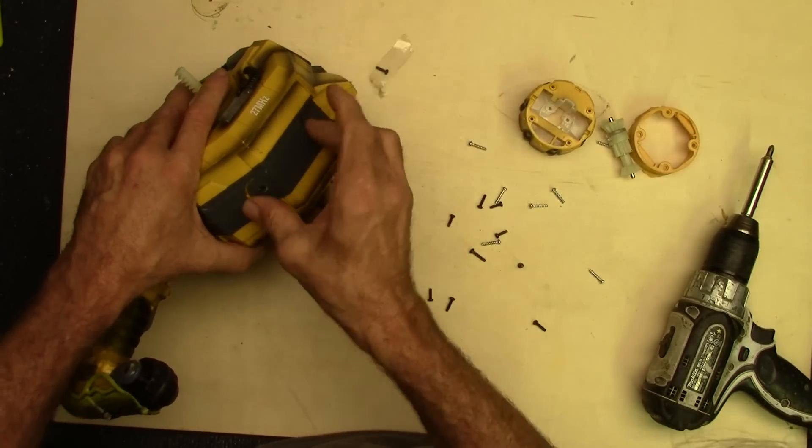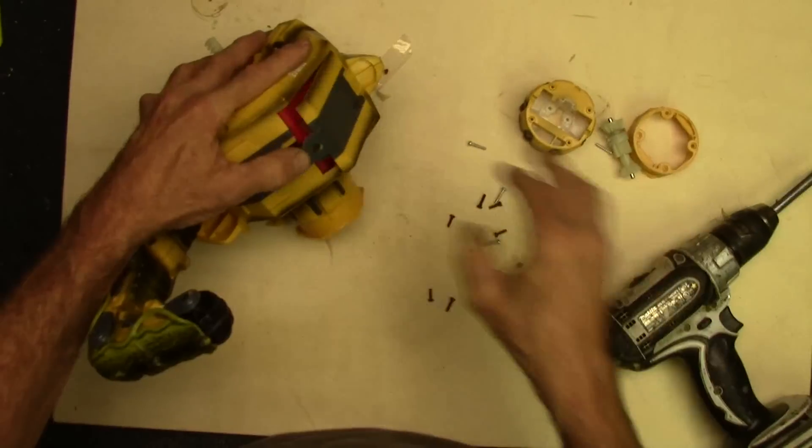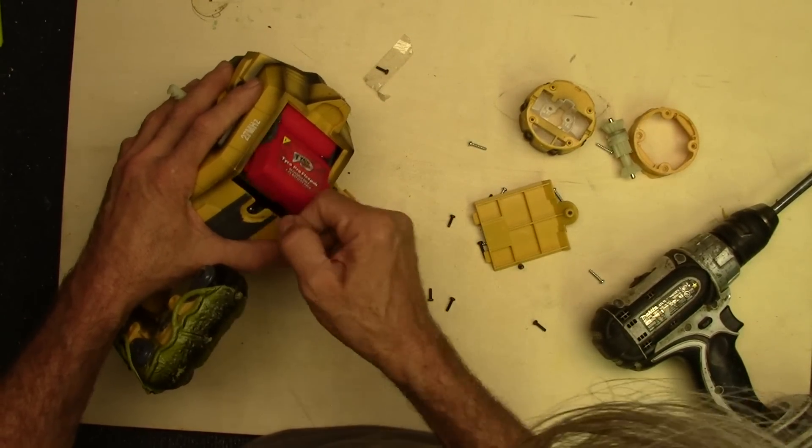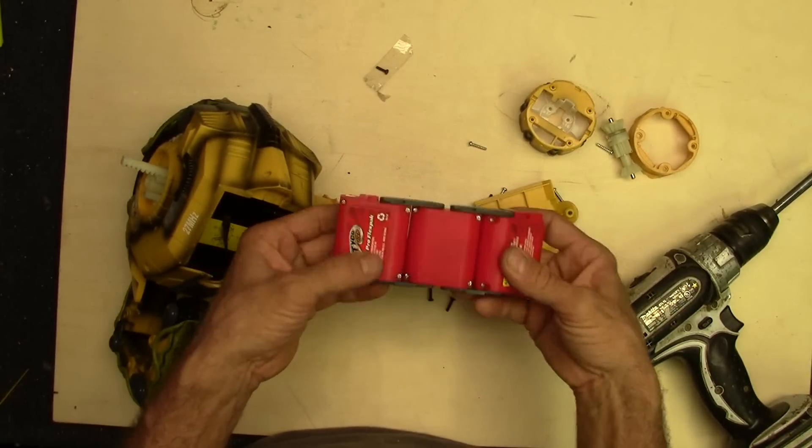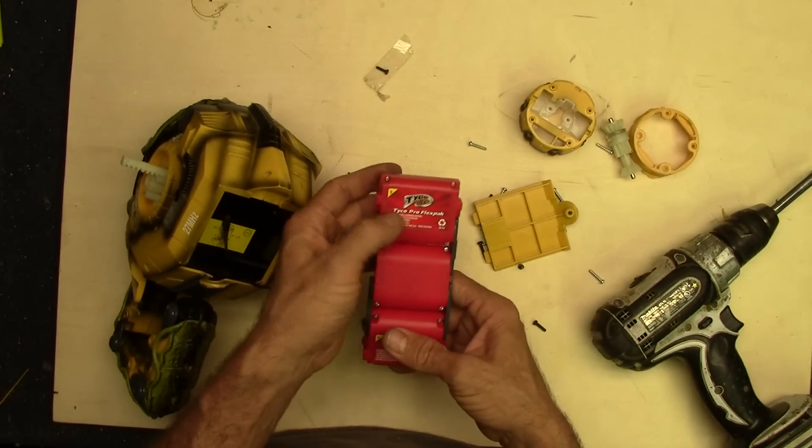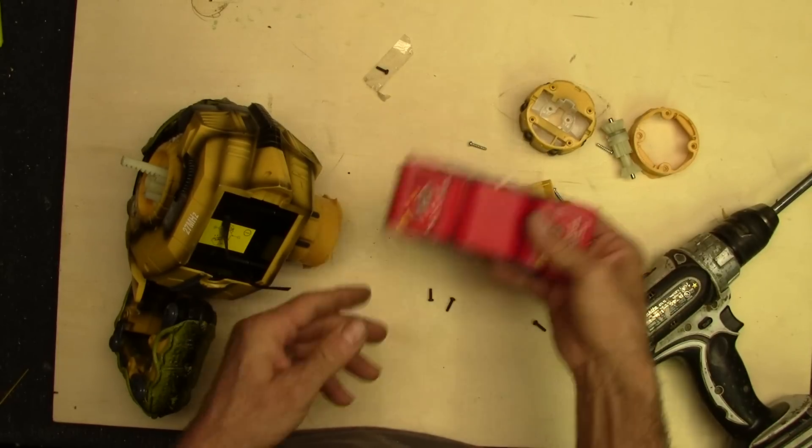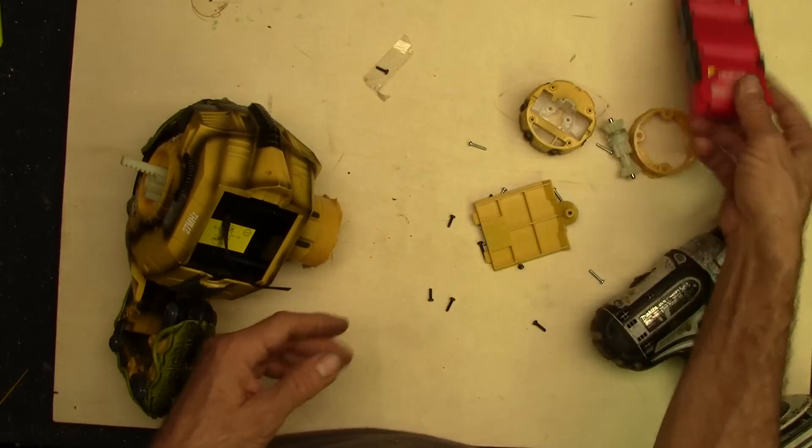This looks like a battery case. Oh, look at that. Rechargeable 7.2 volt battery pack. Wow. Tyco RC. Well, that's cool. There's a nice little battery pack. I don't know if it's a NiCad. Yeah, it's a NiCad. Those are junk.